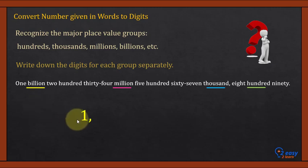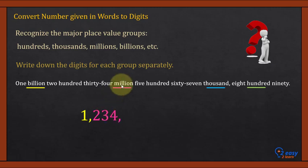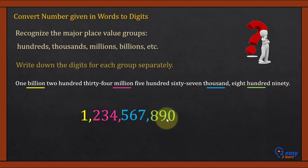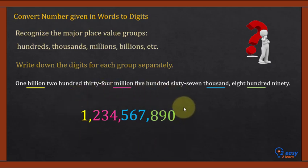One billion — this is 1, then place a comma. Two hundred thirty-four million group — place a comma. Five hundred sixty-seven thousand — place a comma. Eight hundred ninety — this is the last group. So we have the hundred group, thousand group, million group, and billion group. This is the reverse procedure of writing digits in words.